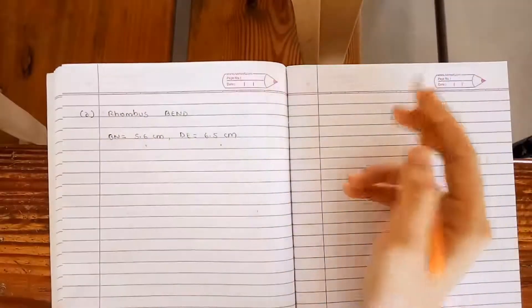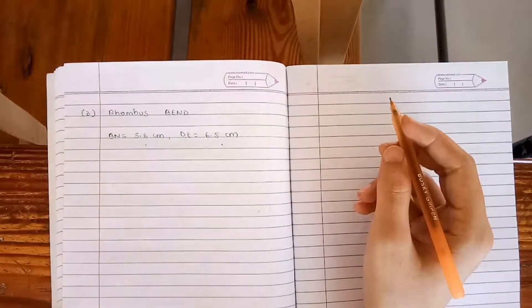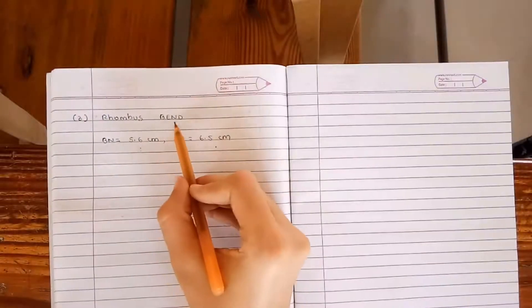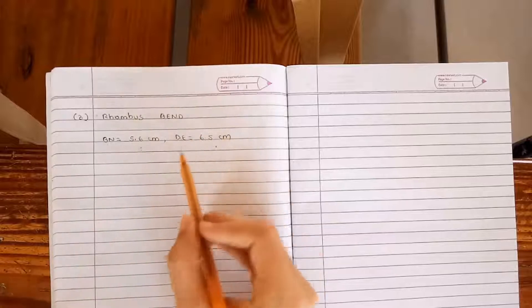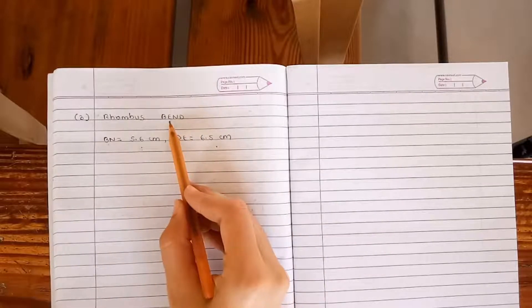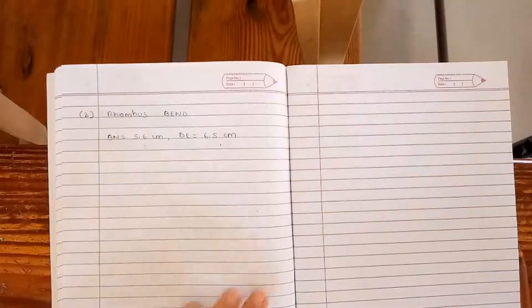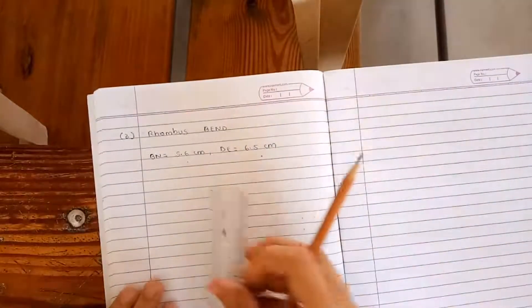Diagonals of the rhombus are perpendicular bisectors of each other. Here, diagonals of B, E, and D are D, E, and B, N. They intersect each other at A. First of all, we will draw a rough figure for this.